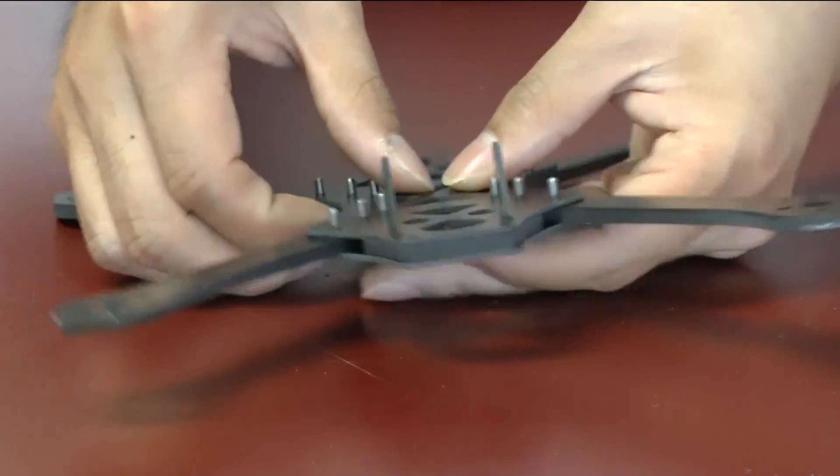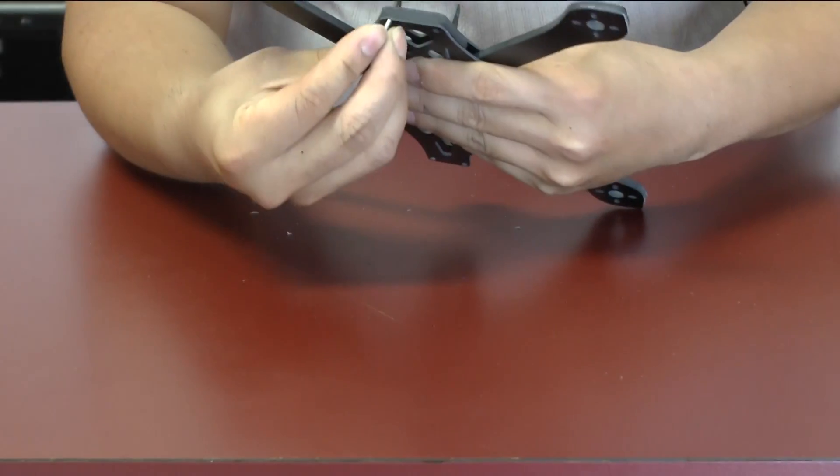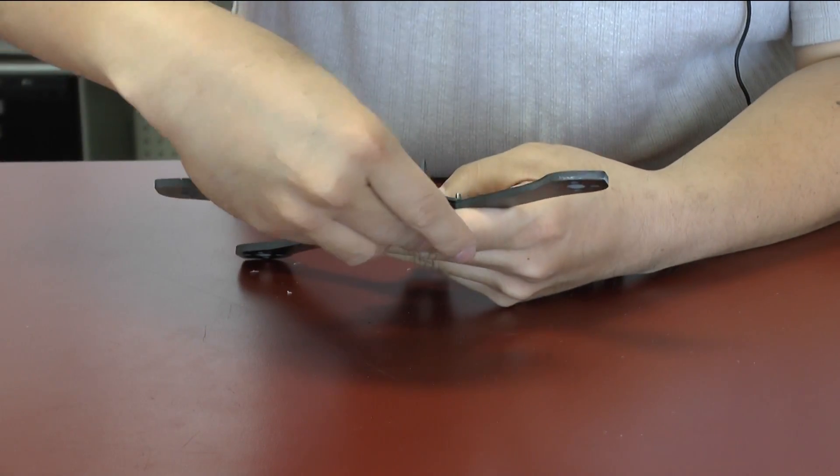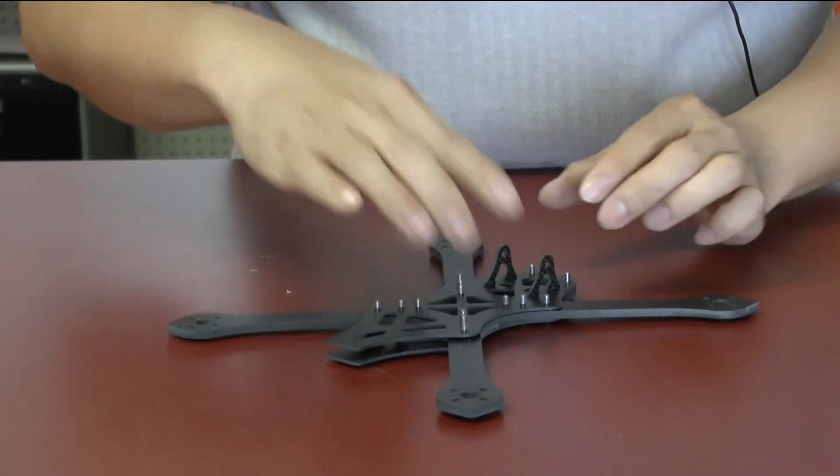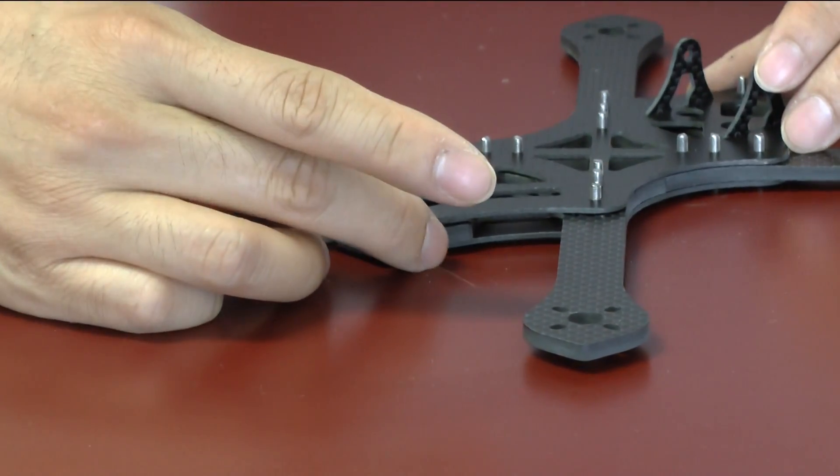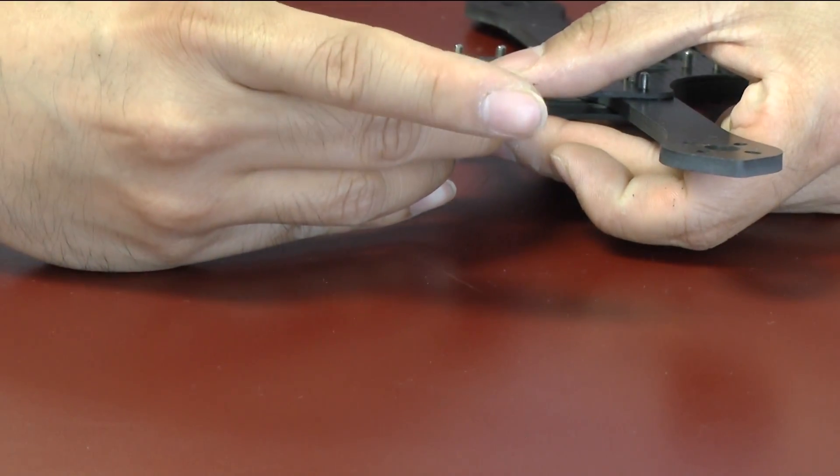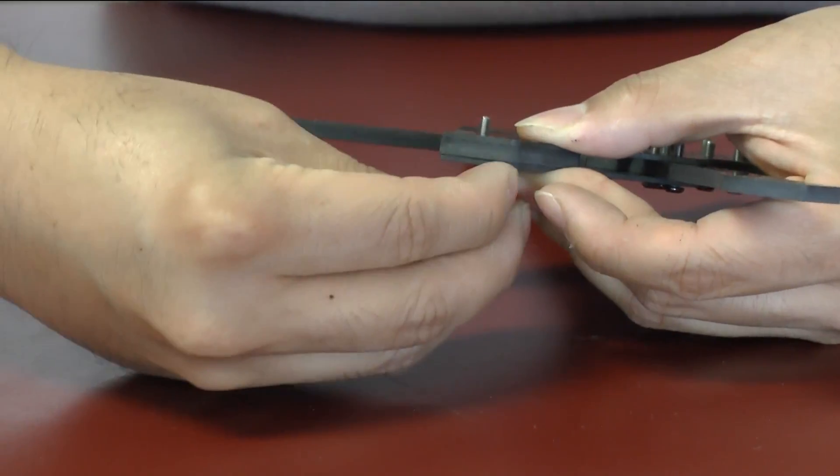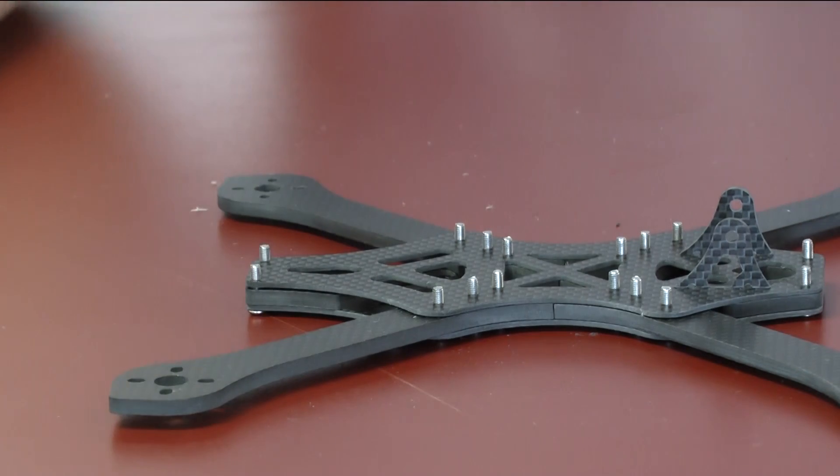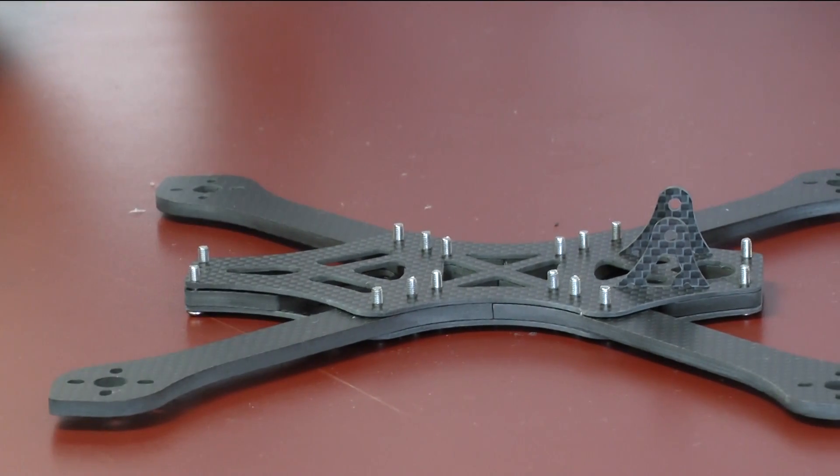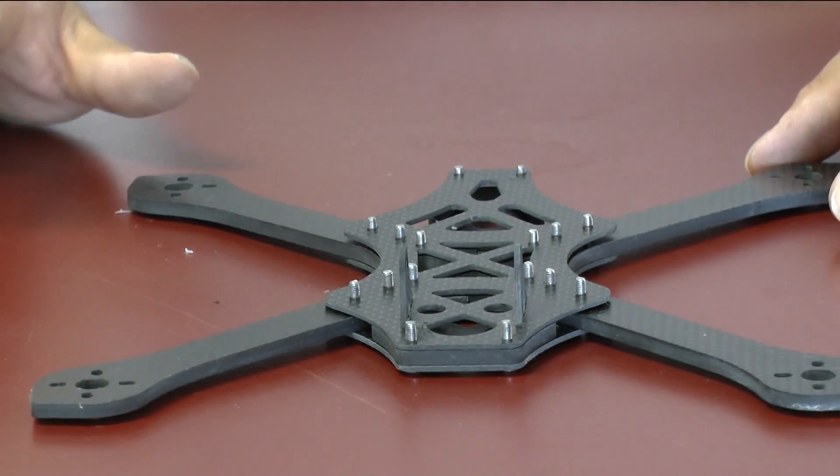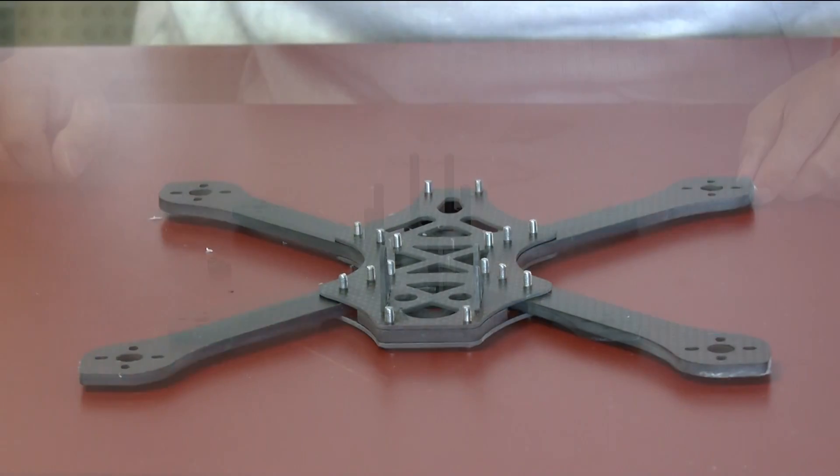So what we can do at this point is we can take the other ones and then we can put them through. And then if you go to the back, there's a bumper on the back that you can slide right in. And then you can add in the last two remaining screws. So this is what it's going to look like when you construct the whole bottom plate. It looks pretty nice.